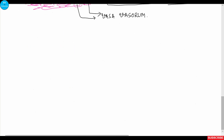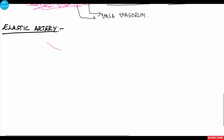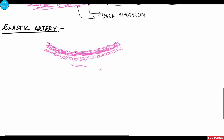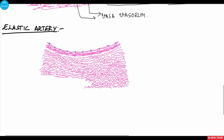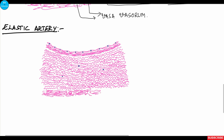Now we look at the specific features of the elastic artery. It contains an endothelial layer and subendothelial connective tissue. The internal elastic lamina is not very prominently appreciated here because the entire tunica media contains multiple layers of elastic fibers. In between the elastic fibers there are smooth muscle fibers, which actually produce the elastic fibers. Outside this is the tunica adventitia with connective tissue and vasa vasorum.